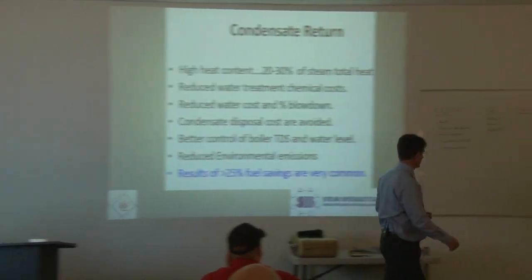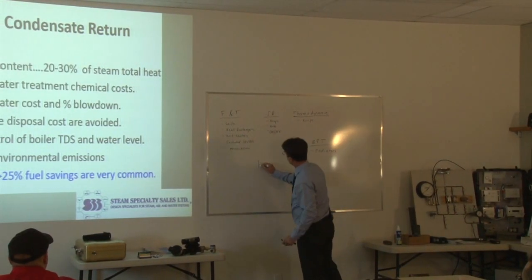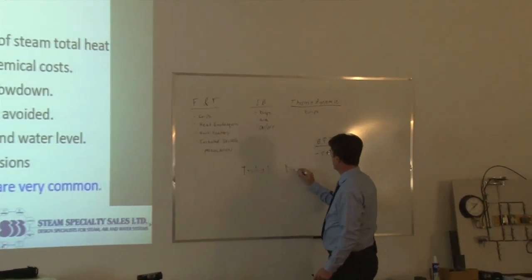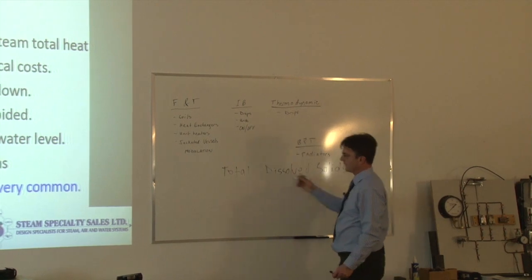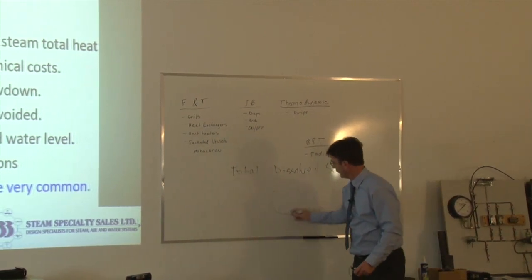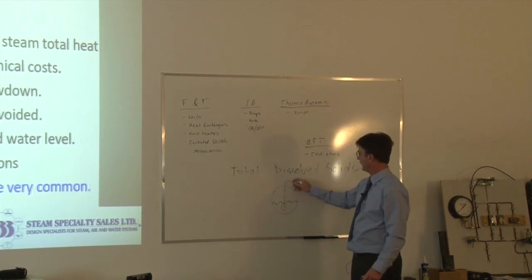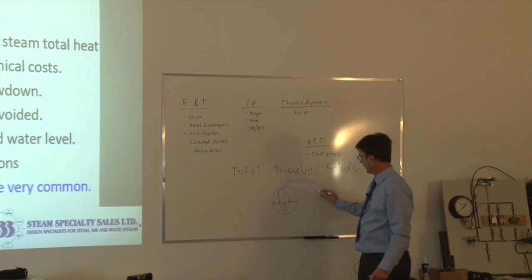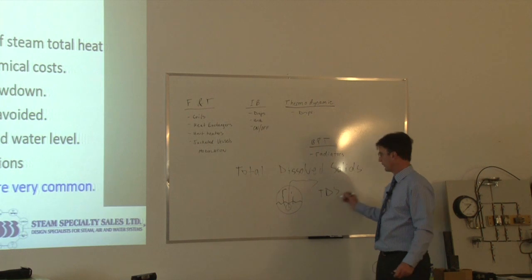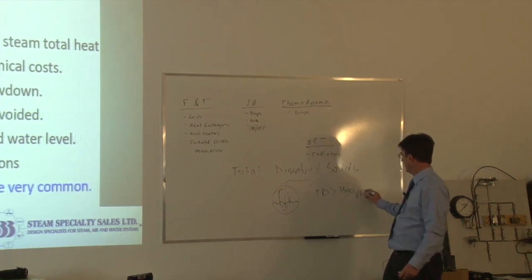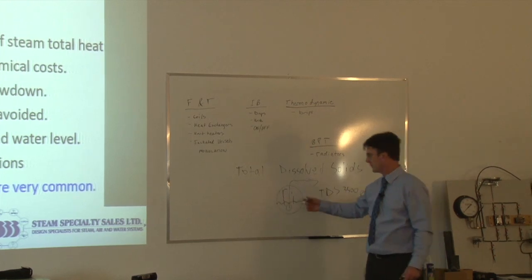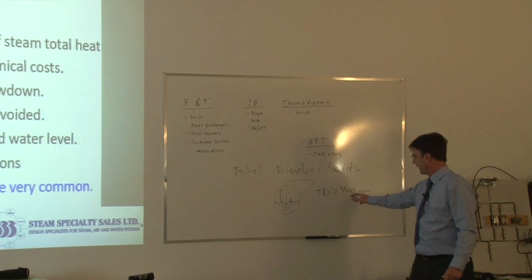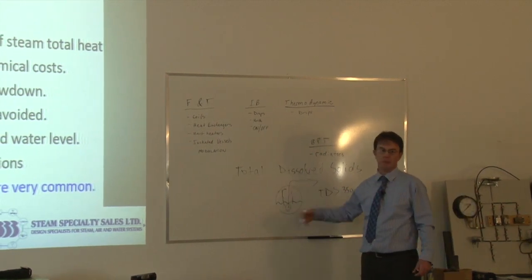TDS stands for total dissolved solids - solids in suspension inside the water. Inside a boiler, water is heated up and turns to steam, goes out into our system. The heavier particles fall back down. Most boilers have an acceptable level of TDS - many smaller boilers accept around 3,500 parts per million. Too high a TDS rate causes priming, carryover, and poor heat transfer. But too low means you'd be blowing down the boiler constantly, causing energy losses.